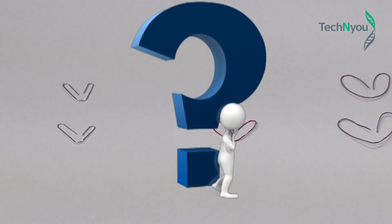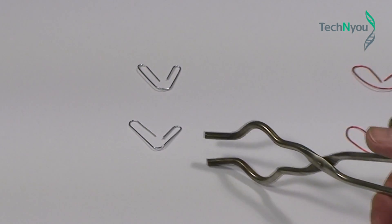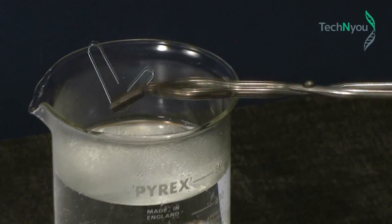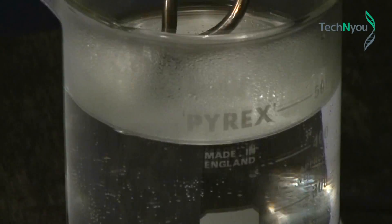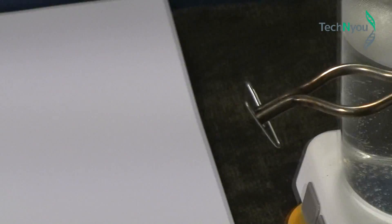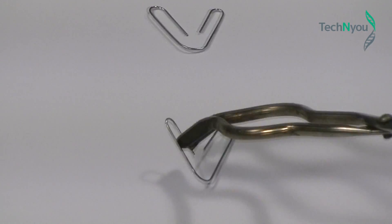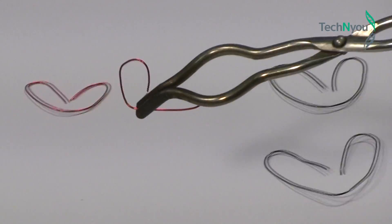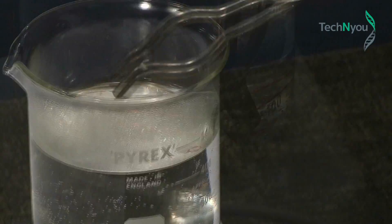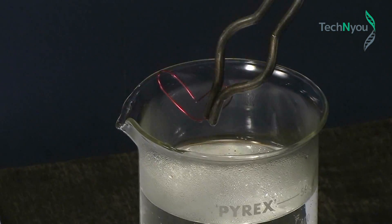We want to know which, if any of these materials, will return to its original shape. So first we drop in our paper clip. As you can see, the shape we've bent into it is still the same in the hot water. We'll now drop in the copper wire. It too has kept its new V shape.